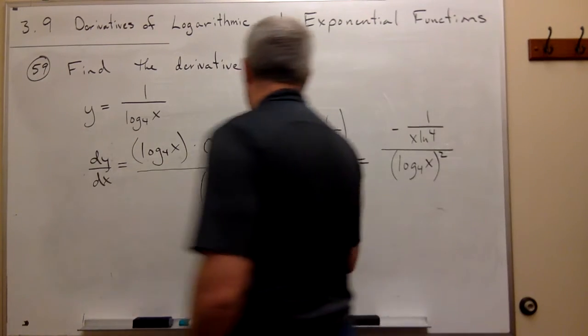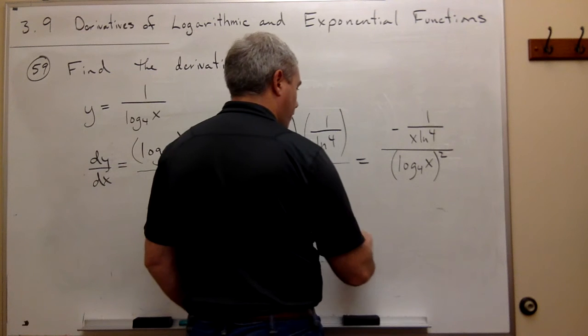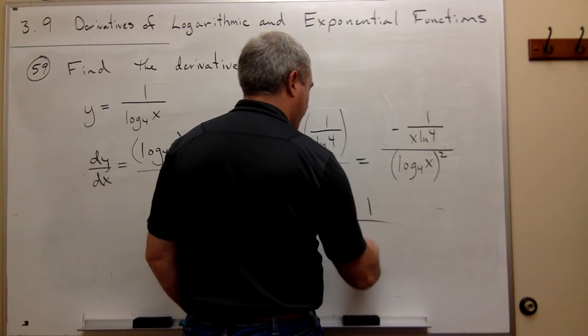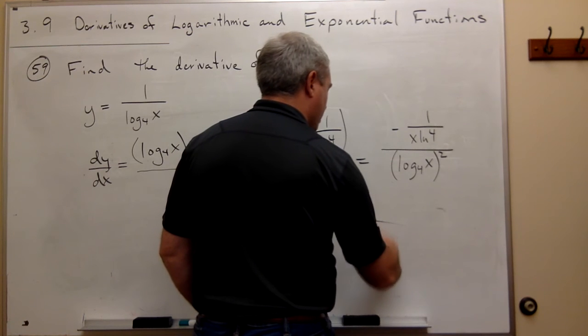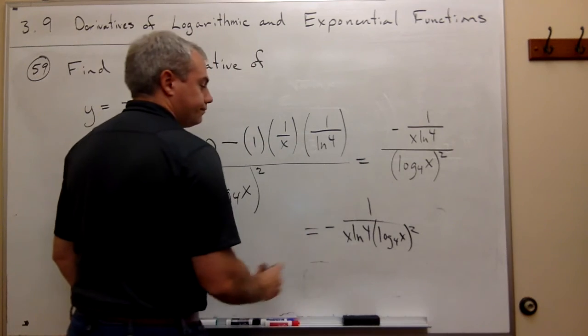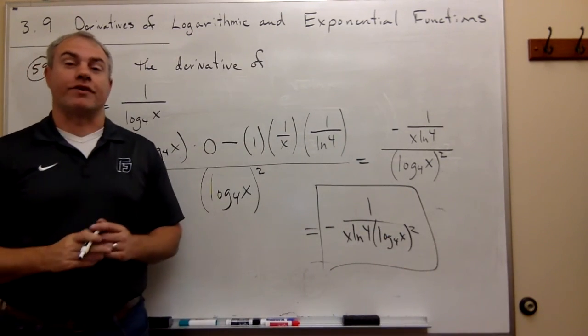And even that could be written cleaner. We could just write this as negative 1 over x ln 4 times log base 4 of x squared. And we have our derivative.